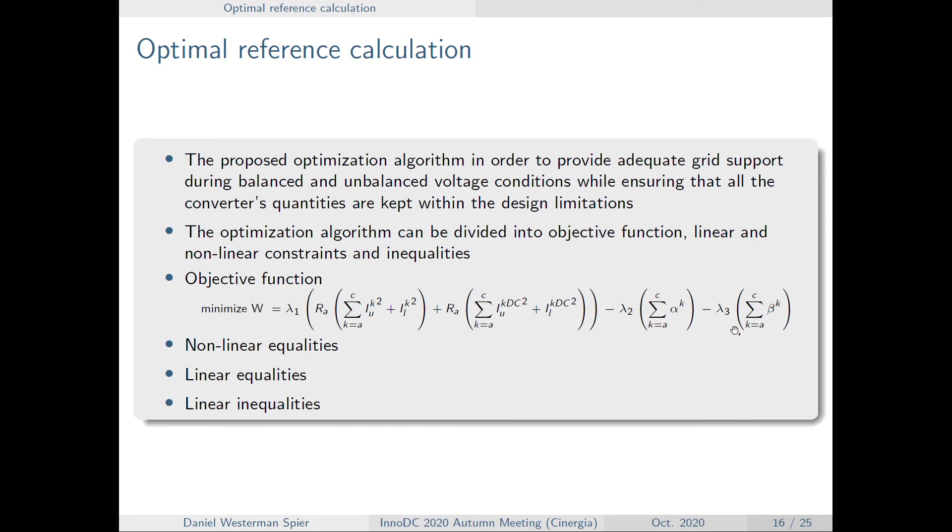In which for this case, we want to maximize the amount of reactive current that we are injecting, therefore lambda 3 is the highest one. The second highest priority is the reactive current, so lambda 2 will have the second highest priority. And the lowest priority is lambda 1, which will try to reduce the impedance losses in the arms.